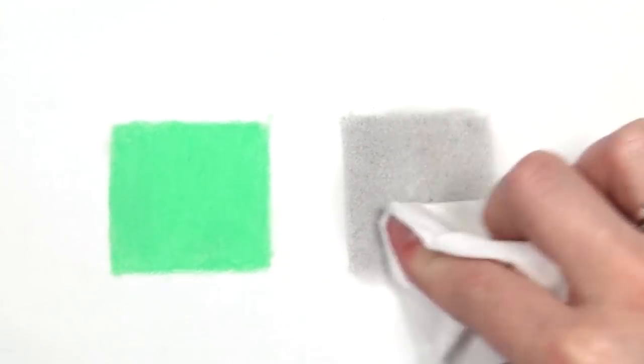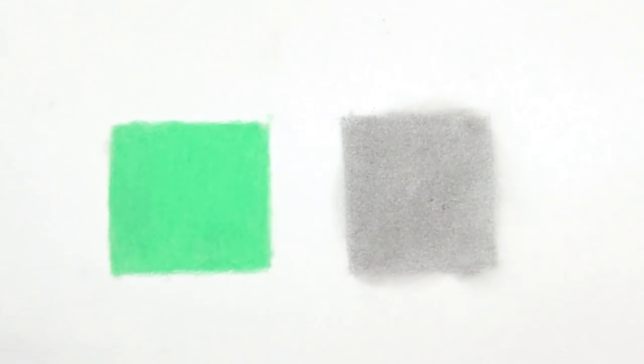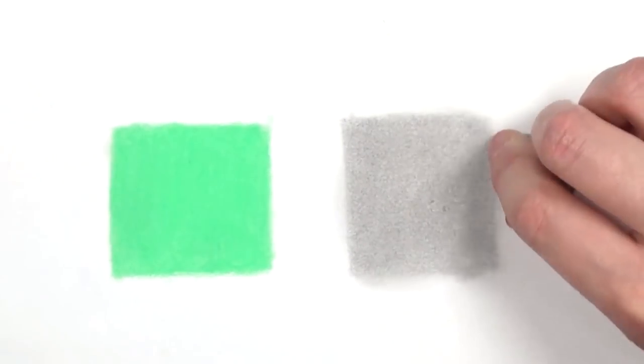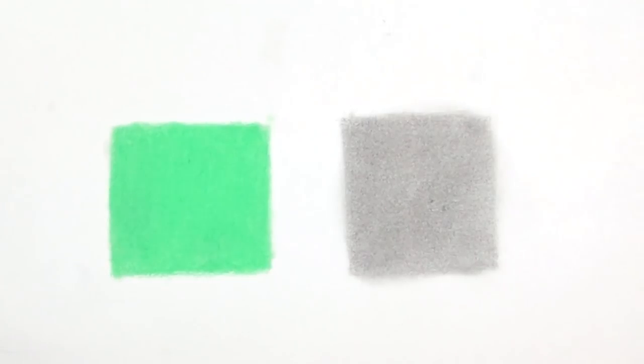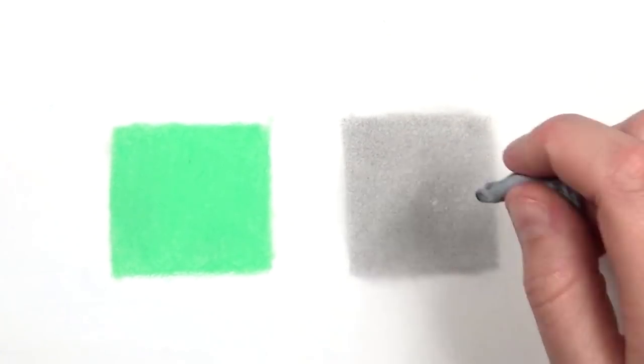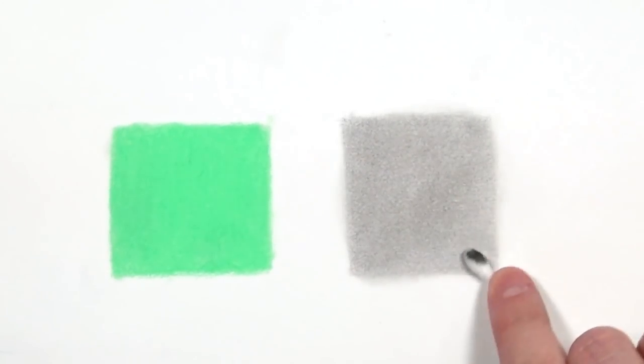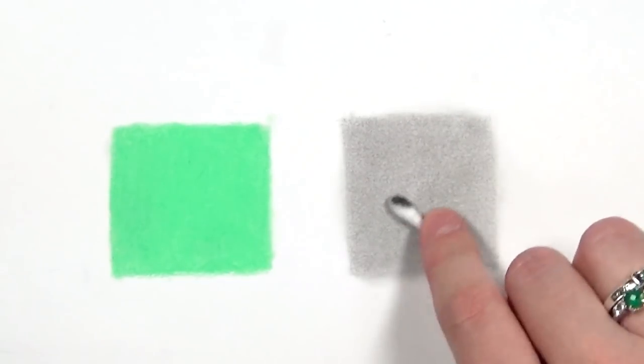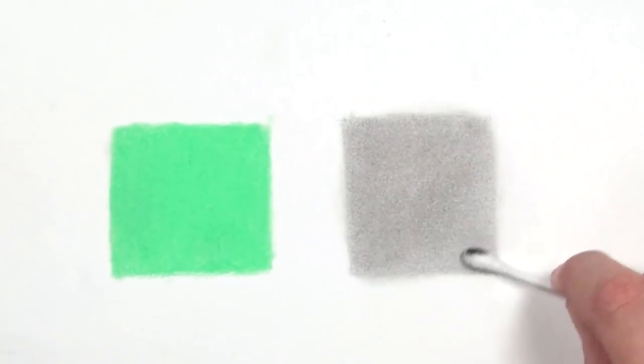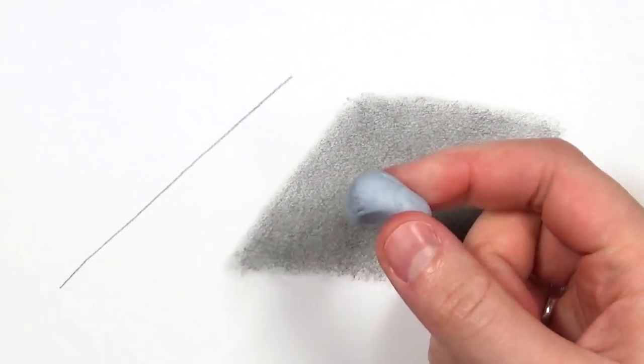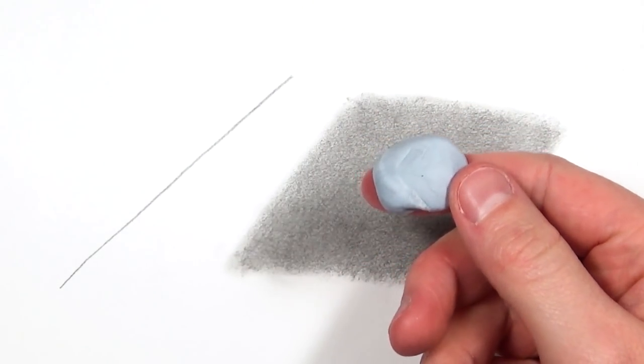I really like using cotton buds to blend color pencils. I think it gives a really smooth look and you can have a bit more control sometimes than you can with paintbrushes. Because it's really small it's really good for blending those detailed areas, and they're just really cheap which means that you can use quite a few of them and it doesn't really matter.